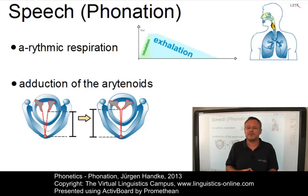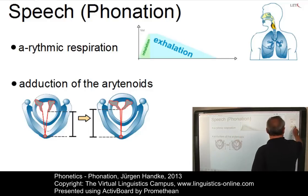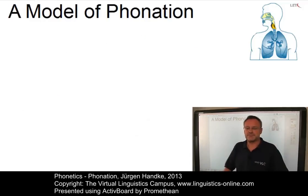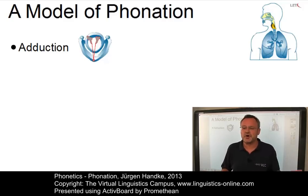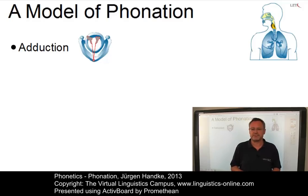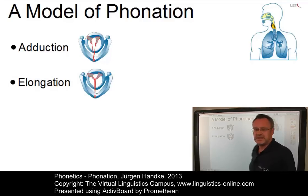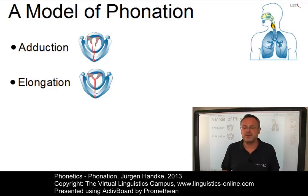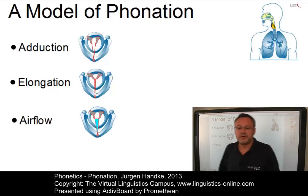The whole mechanism of vocal fold vibration can best be explained by means of an aerodynamic model. It involves three steps. Step one: adduction and opposition of the arytenoid cartilages in the midline and the immobilization of the posterior ends of the vocal ligaments. Step two: elongation and increased tension in the vocal ligaments. Step three: airflow through the glottis supplying the energy for vibration.